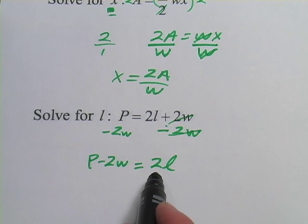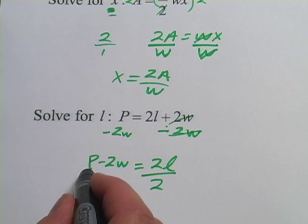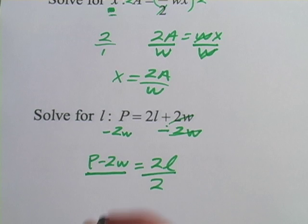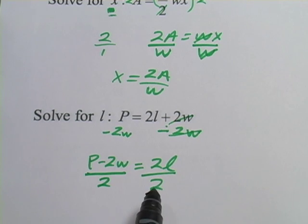Now, all that's being done to L is it's being multiplied by 2. So we do the opposite of that. We divide by 2. And we have to do it to both sides. And make sure you do it to the whole side. It's everything on the left side that's being divided by 2 and everything on the right side that's being divided by 2.